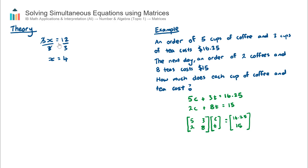For matrices, suppose we have a matrix A and some unknown x that equals some answer B — the matrix equation Ax = B. By analogy with algebra, we might try dividing both sides by A to isolate x. However, we cannot divide matrices, so we need to use a different technique.